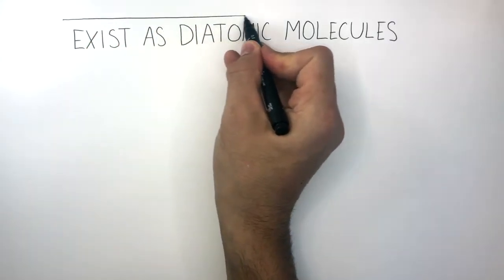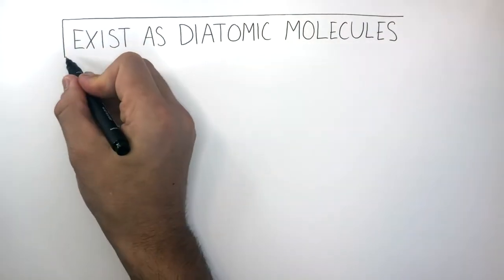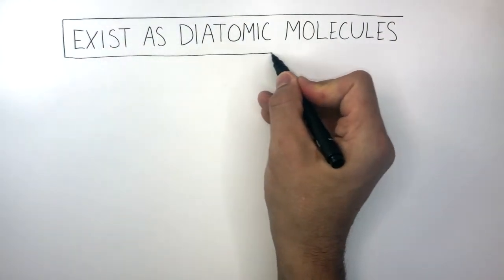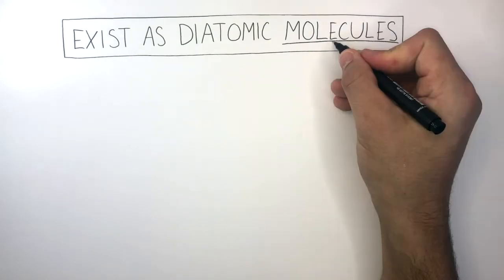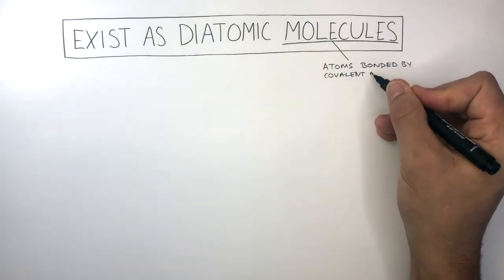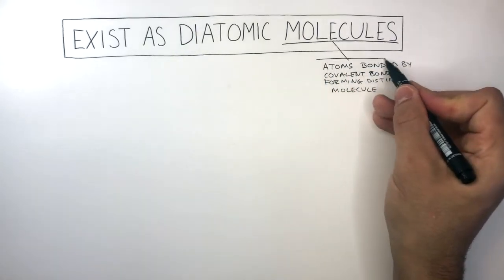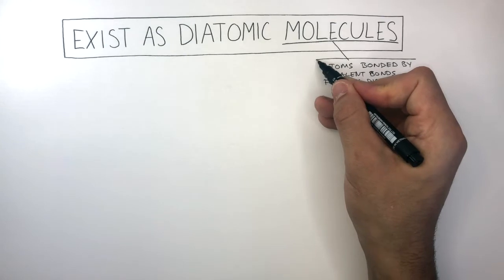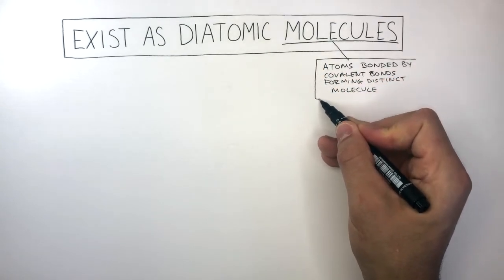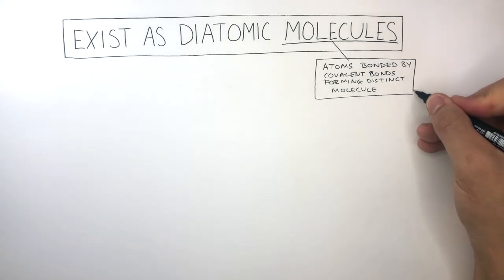Let's break down the words diatomic and molecules to really understand what a diatomic molecule actually is. A molecule consists of a group of atoms bonded by covalent bonds to form a distinct molecule. The word distinct means it is isolated or individual. The molecule is by itself and it is not bonded to other molecules.